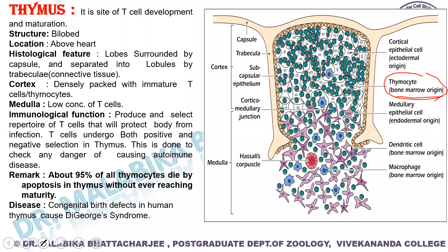This three-dimensional stromal cell network is composed of cortical epithelial cells, dendritic cells, and macrophages. These three cells form the major stromal cell networks of the thymus.